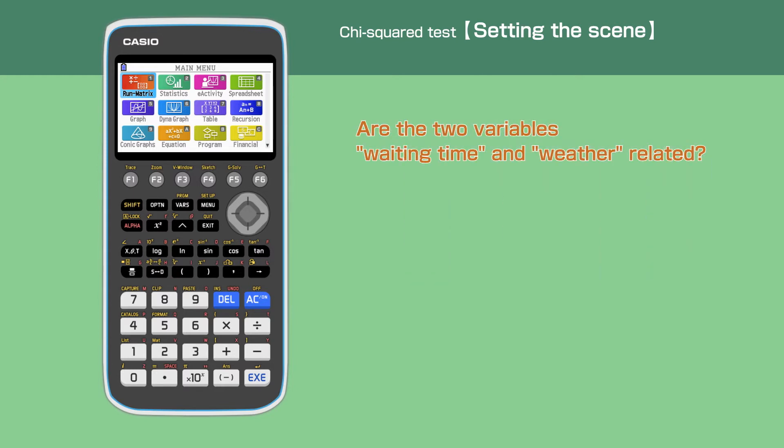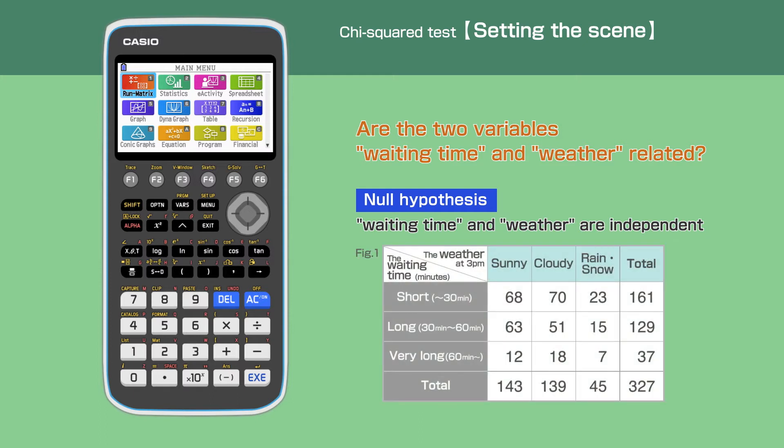In this video we are going to test if the two variables, waiting time and weather, are related. We will use the chi-squared test to determine the independence of the two variables.